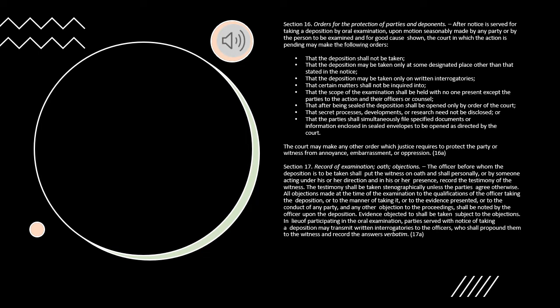Section 16. Orders for the Protection of Parties and Deponents. After notice is served for taking a deposition by oral examination, upon motion seasonably made by any party or by the person to be examined and for good cause shown, the court in which the action is pending may make the following orders: that the deposition shall not be taken; that the deposition may be taken only at some designated place other than that stated in the notice; that the deposition may be taken only on written interrogatories; that certain matters shall not be inquired into; that the scope of the examination shall be held with no one present except the parties to the action and their officers or counsel.